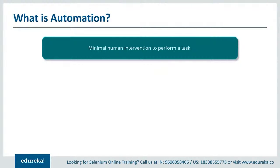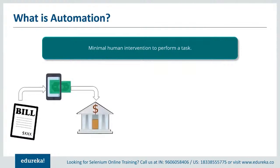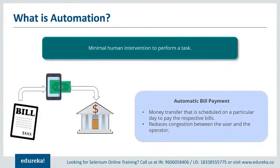Let's consider this example: suppose you want to pay a bill and the due date is very near, but you are not in a situation where you can physically go there and pay it. Every time you want to make a transaction, you need to add details so the system acknowledges it's a genuine user. Technology has improvised so much that there is an option called automatic bill payment, where the amount is directly deducted from the respective account and the user can pick a date for the transaction.